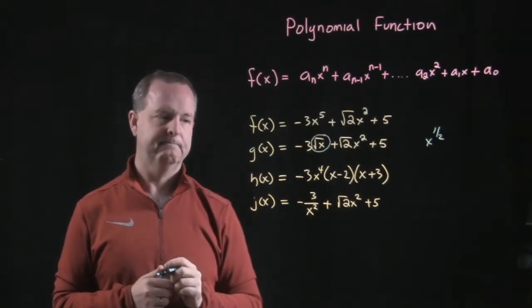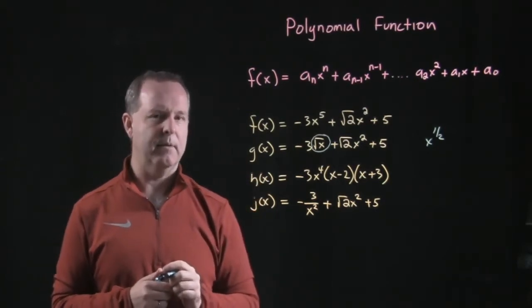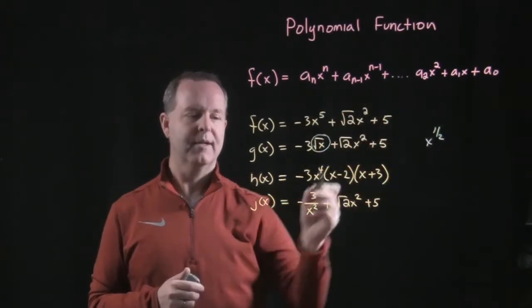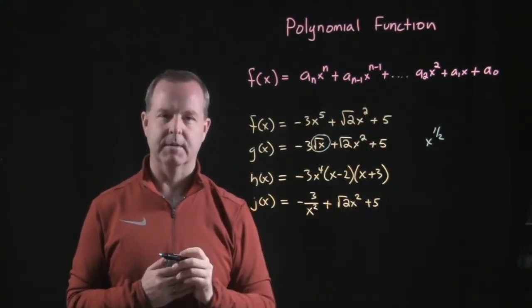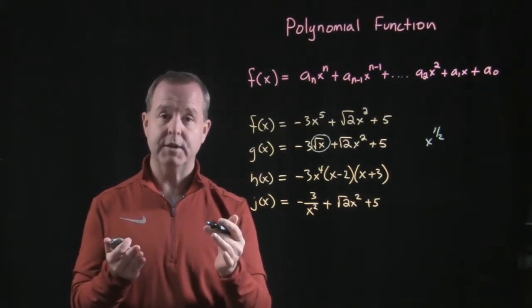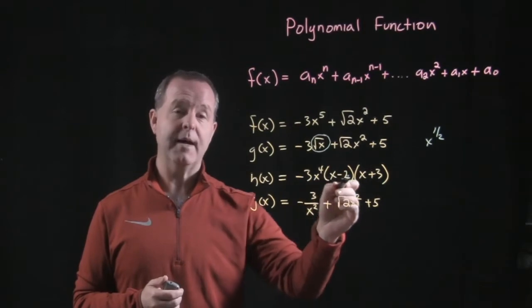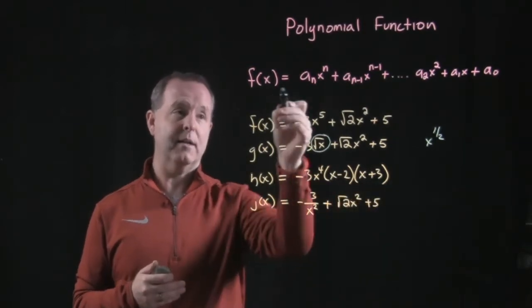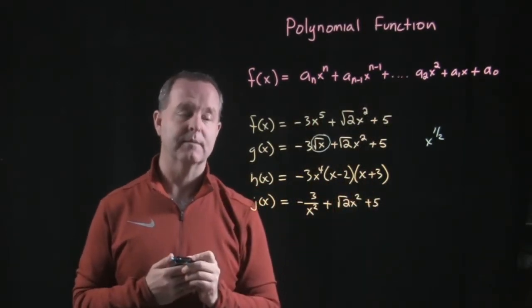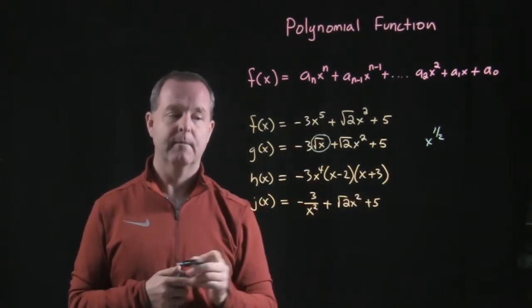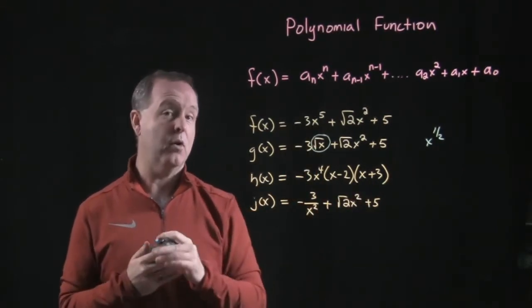H of x. Well, h of x might be a little bit more obscure because it's not a collection of cascading terms. It's a product of terms. But, can you use your imagination? We can multiply these out, can't we? And when we multiply them out, they become a collection of cascading terms. So, if this were multiplied, it would fall in that form. So, h of x is a polynomial function.